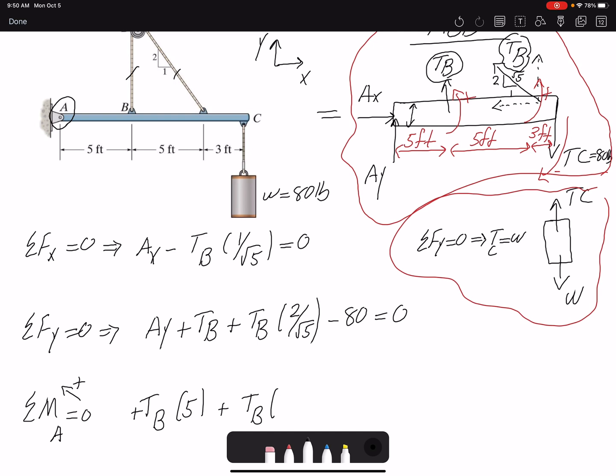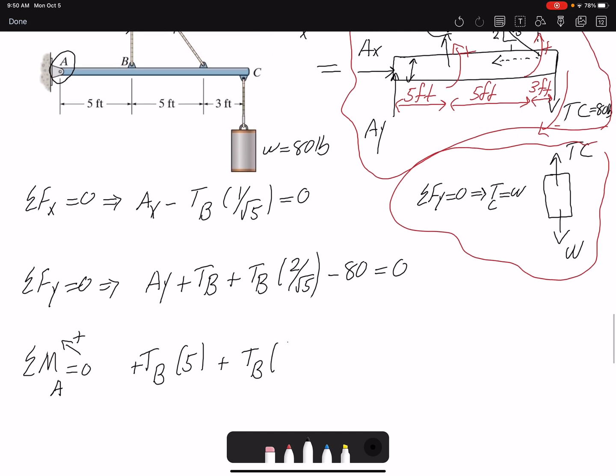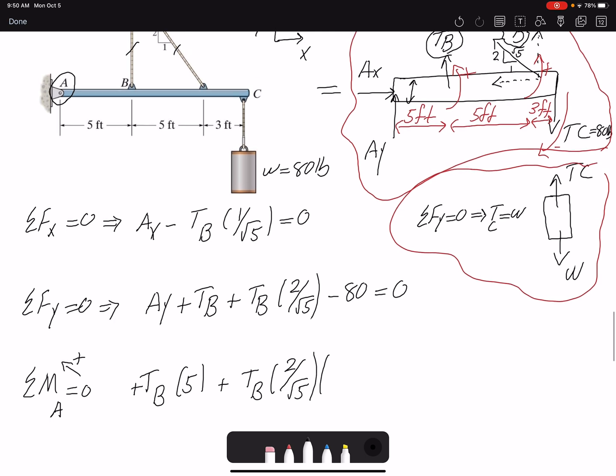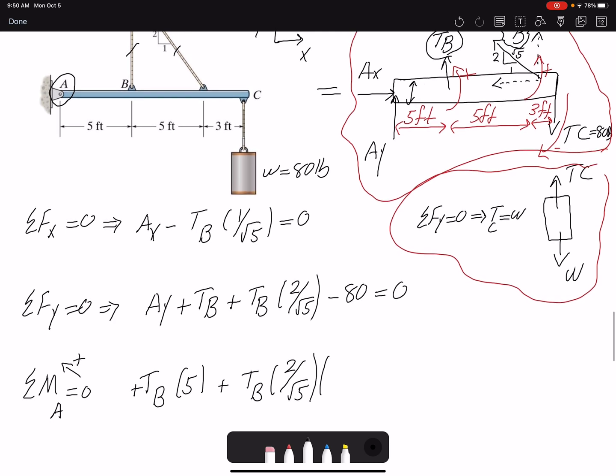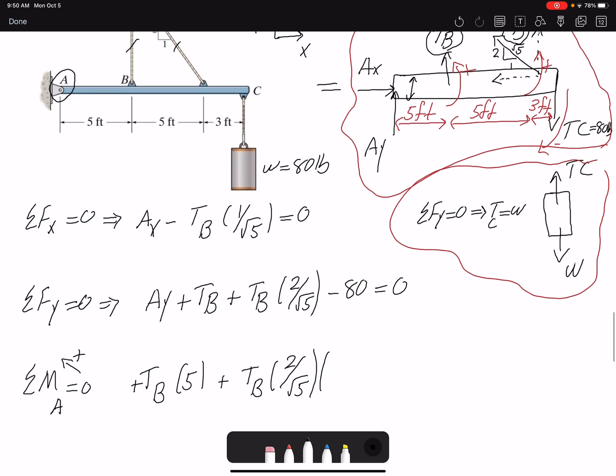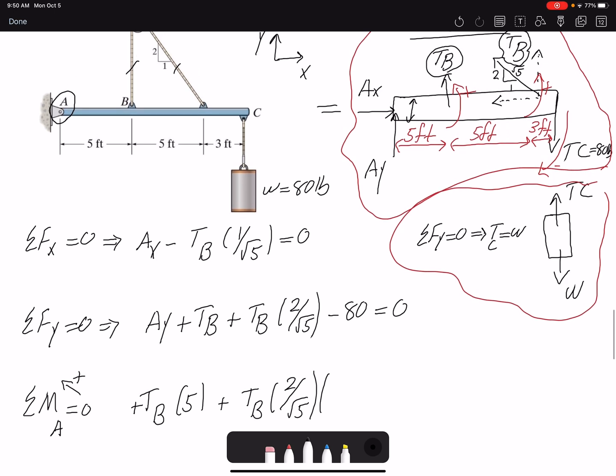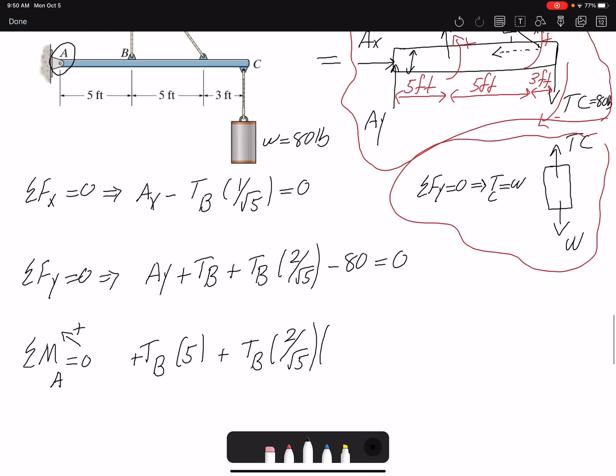The vertical component is 2 over square root of 5. So 2 over square root of 5 just gives me the force. I still need to multiply it by the moment arm. I've seen in exams that students forget multiplying it by moment arm because they've already multiplied it to find the vertical component. So 5 plus 5, that would be 10. The last one would be 80 pounds, the moment arm 13.